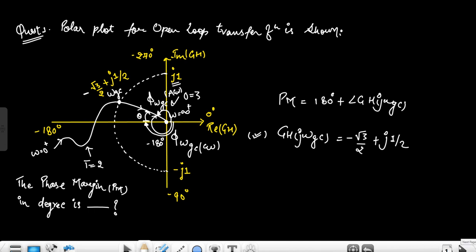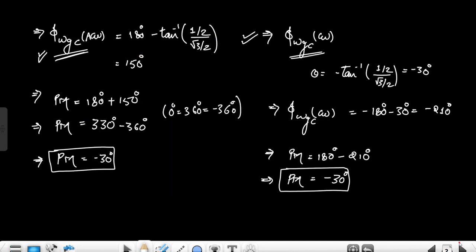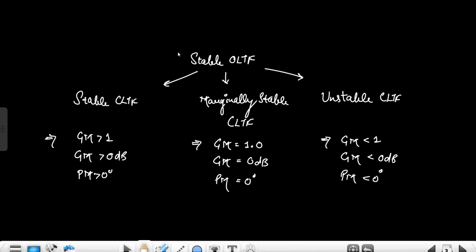Let's understand the concept of gain margin and phase margin. For a stable CLTF, gain margin should be greater than 1 (or greater than 0 dB) and phase margin should be greater than 0°. For a marginally stable CLTF, gain margin equals exactly 1 (0 dB) and phase margin is exactly 0°. For an unstable CLTF, gain margin is less than 1 (less than 0 dB) and phase margin is less than 0°.